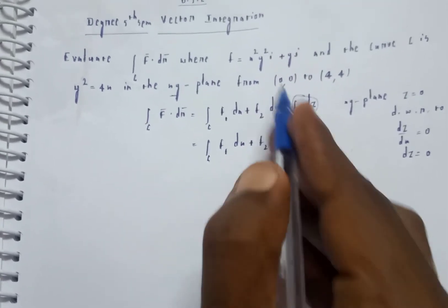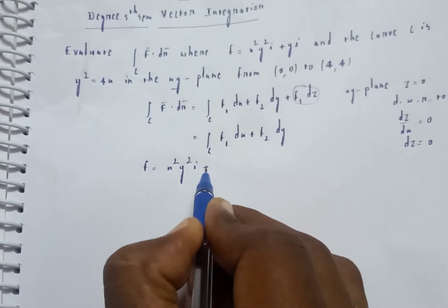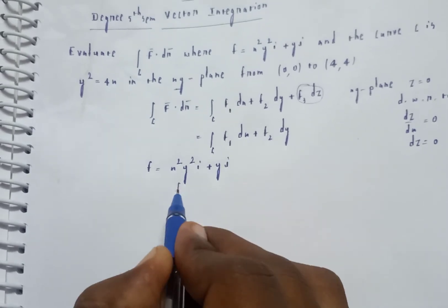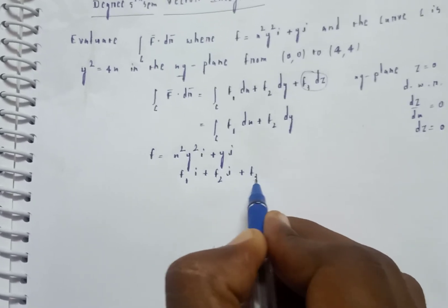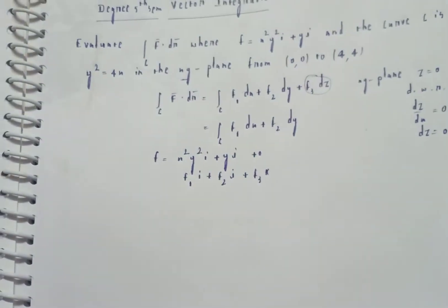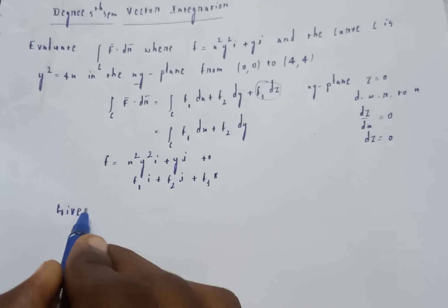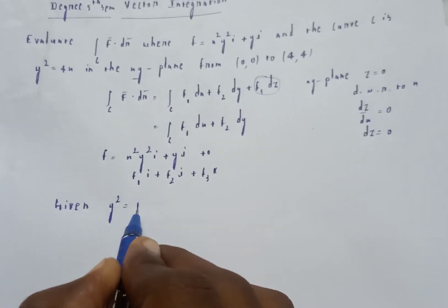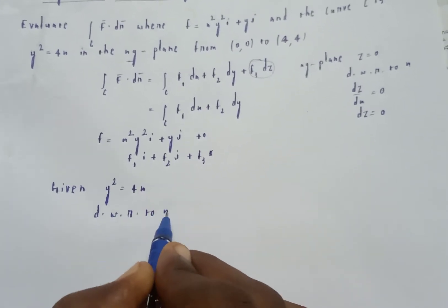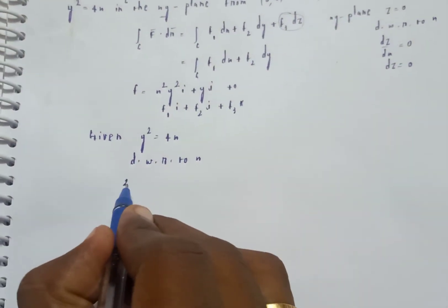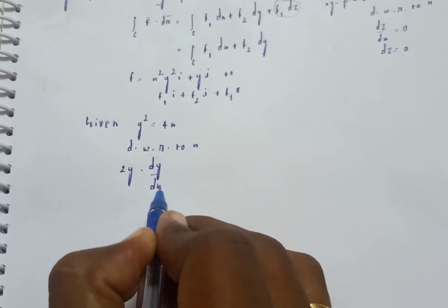From F equals x squared y squared i plus y j, comparing with f1 i plus f2 j plus f3 k, we get f1 equals x squared y squared, f2 equals y, and f3 equals 0. The given curve is y squared equals 4x.